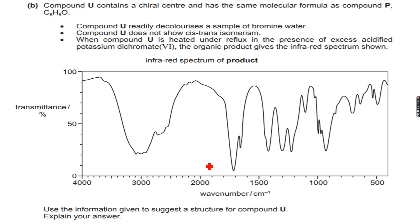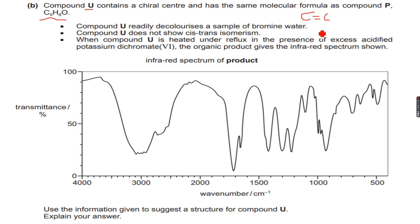Compound U contains a chiral center and has the same molecular formula as compound P — C5H8O. Compound U readily decolorizes bromine water, which tells us there must be at least one carbon-carbon double bond, since electrophilic addition of bromine takes place on alkenes. Additionally, compound U does not show cis-trans isomerism.